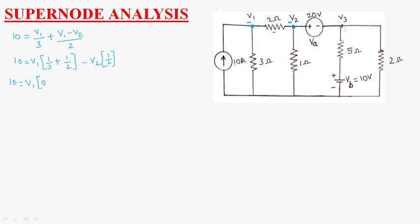Simplifying, this gives us: V1 times 0.83 minus V2 times 0.5 equals 10. Let us call this equation 1.